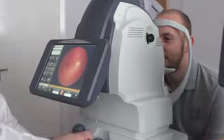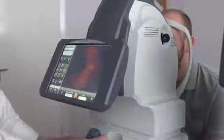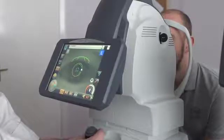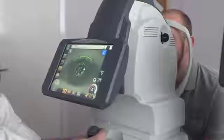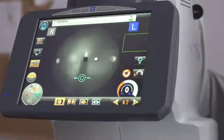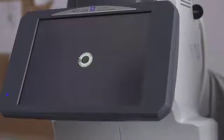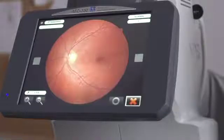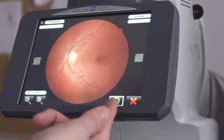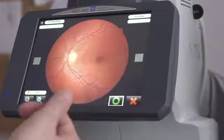To take the shot of the left eye, we simply move across to the left hand side. Position the device in front of the patient's pupil and move forward to alignment. Once again, the AFC will take over and take the photo. And once again, if you are happy with the photo you press the green circle. If you wish to repeat, press the red cross.